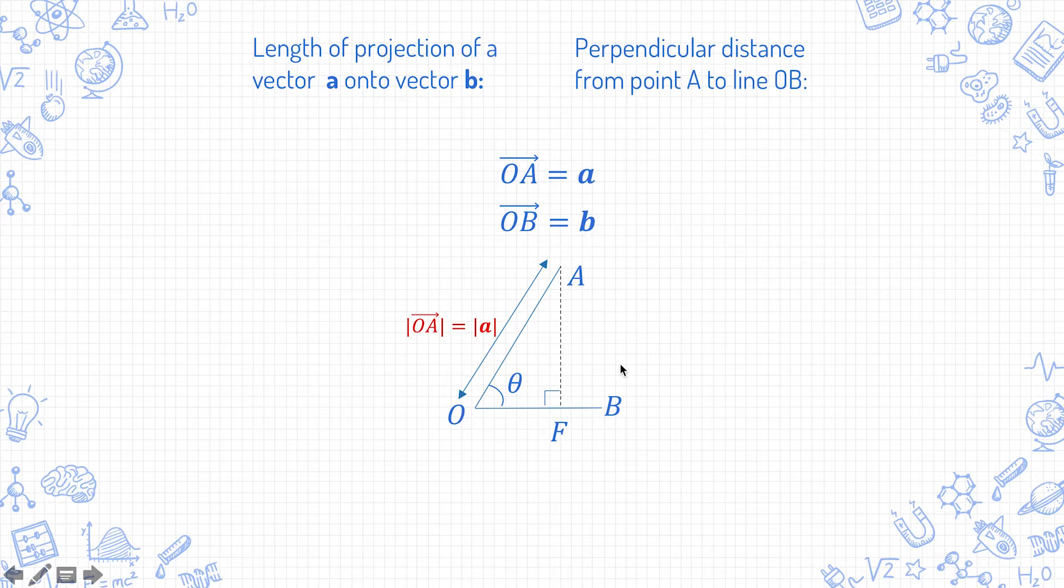F is the foot of perpendicular from A to OB. Looking at this triangle OAF, we already know the length of the side OA which is mod a. Our aim is to find OF and AF.